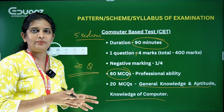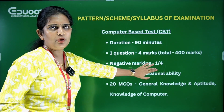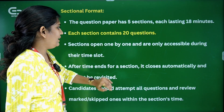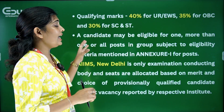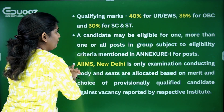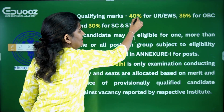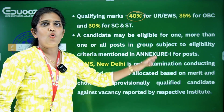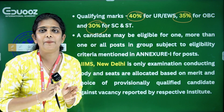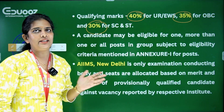Complete all sections within the allotted time. Regarding the pass criteria and cut-off marks: General and EWS (unreserved) category requires 40%, OBC category requires 35%, and SC/ST category requires 30%.